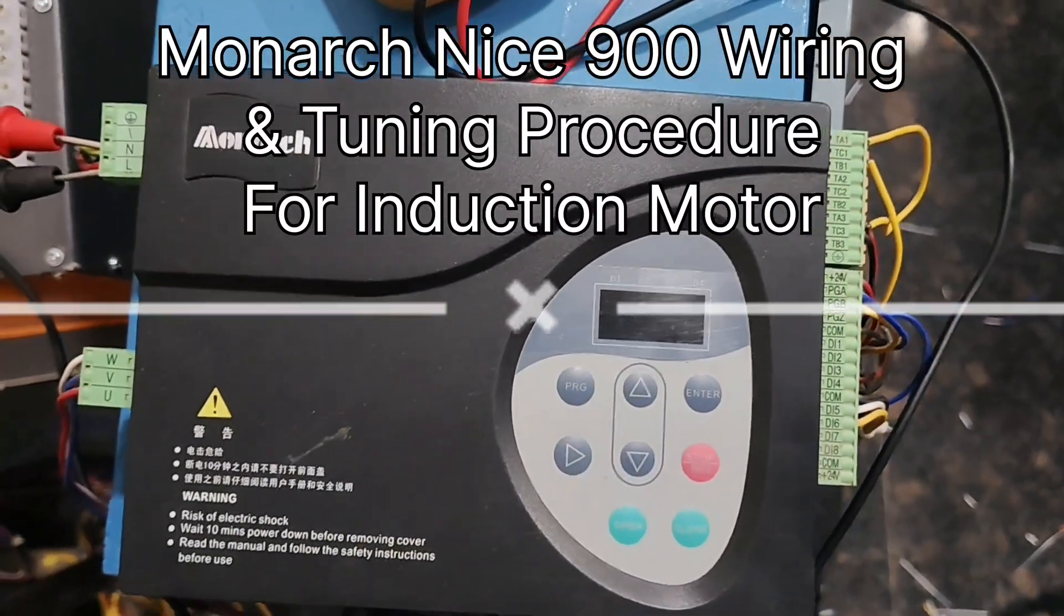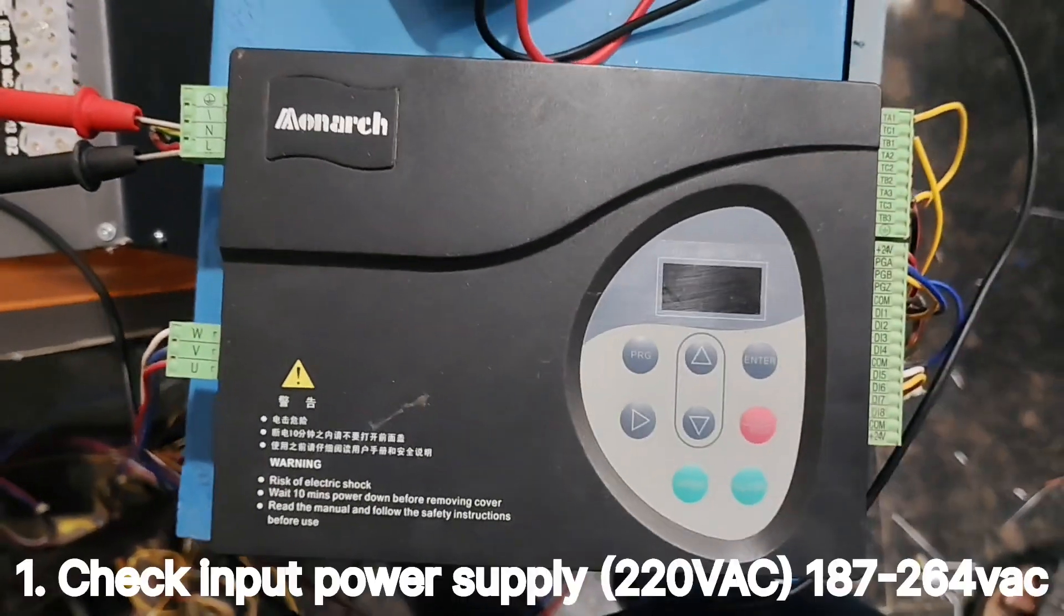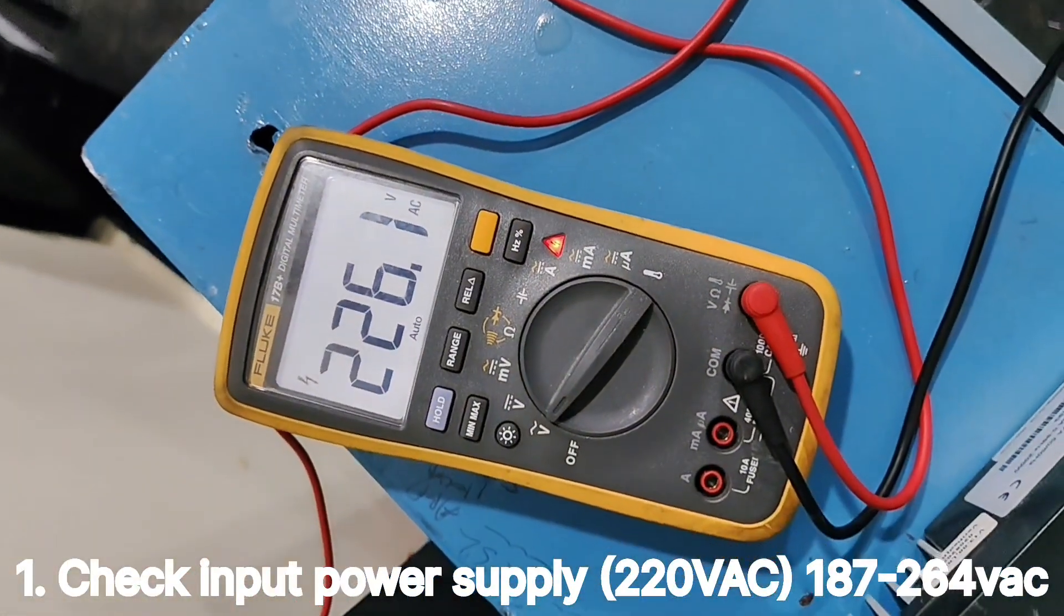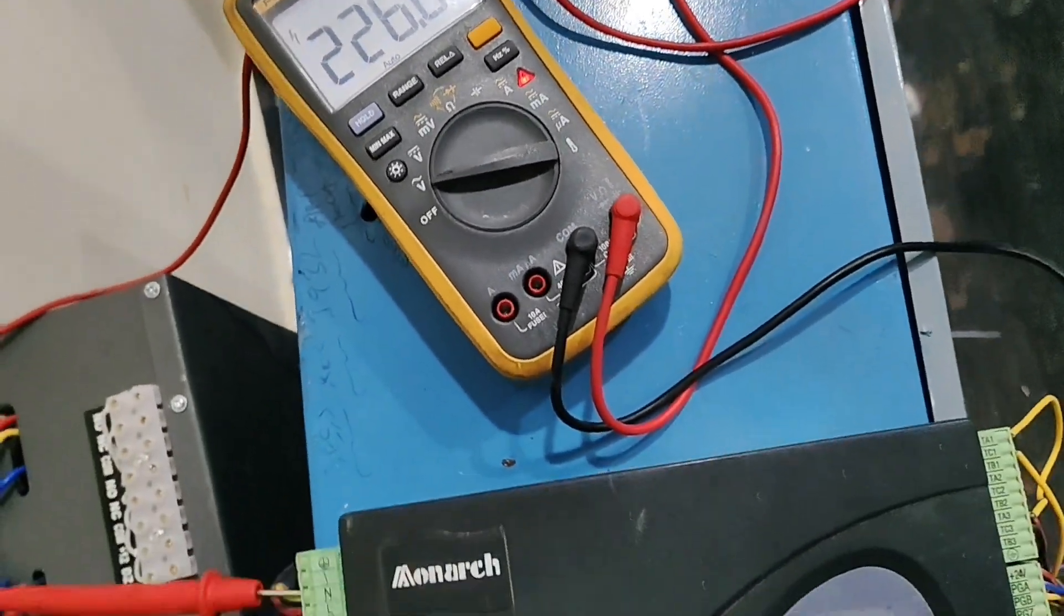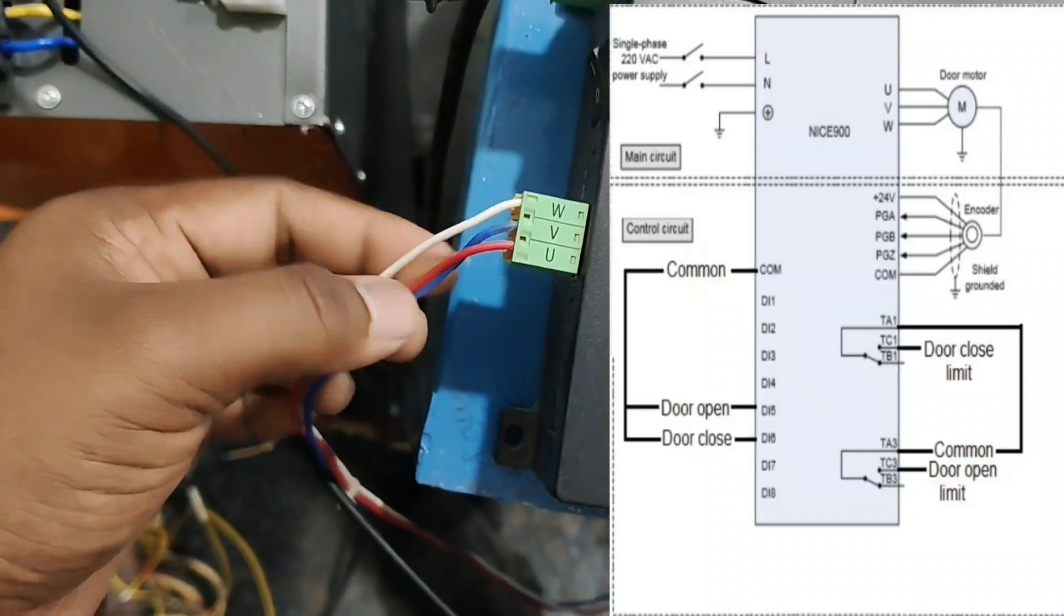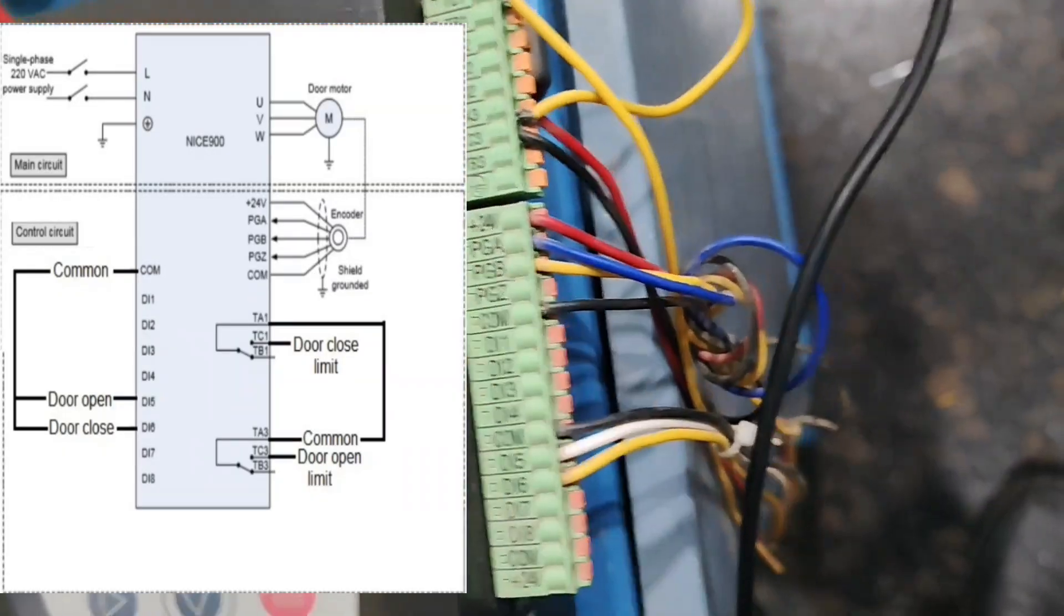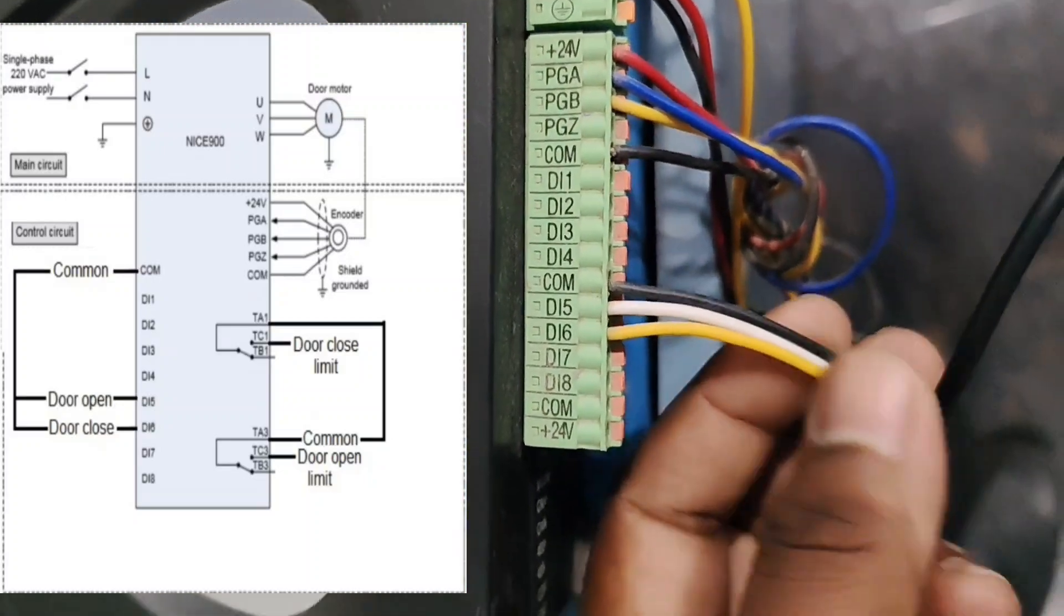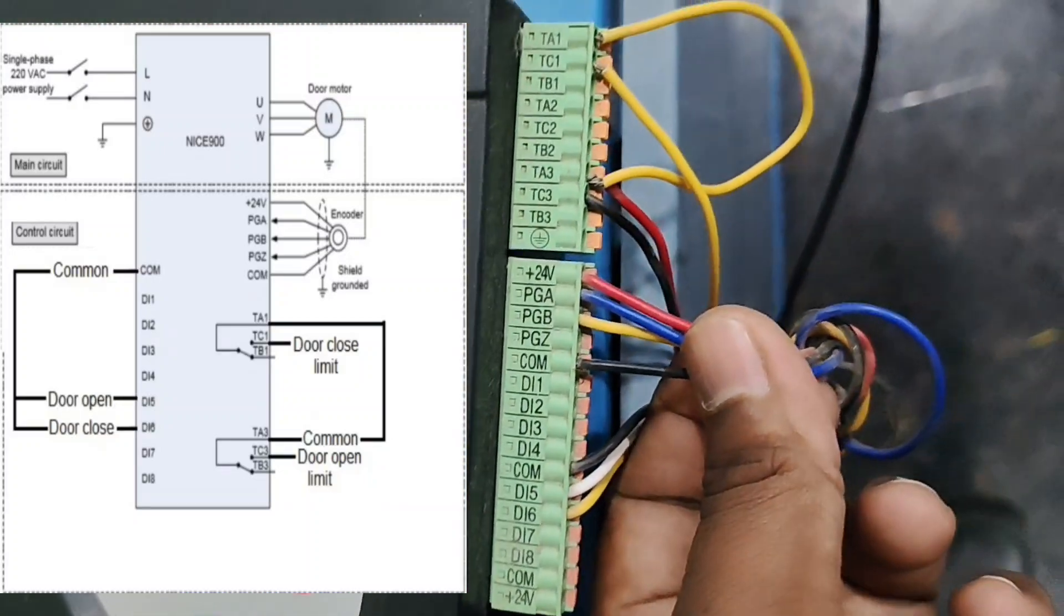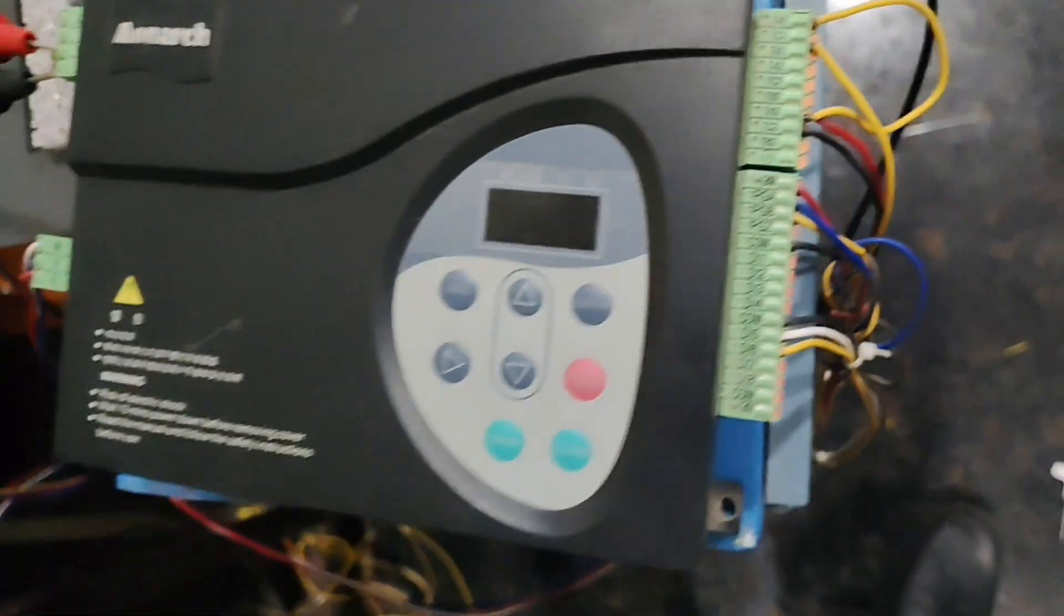Nice 900 programming and commissioning tuning procedure. First, check input voltage is 226V. After that, connect door motor wiring, door open close command and common wiring, door motor encoder wiring, and door open limit and door close limit wiring.